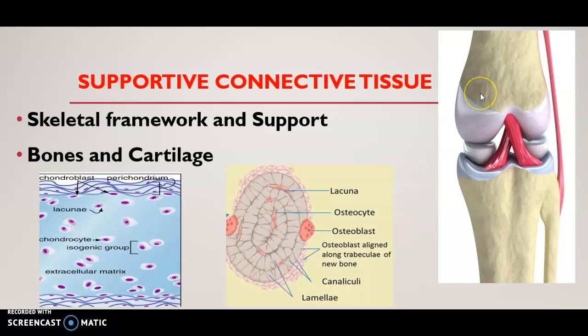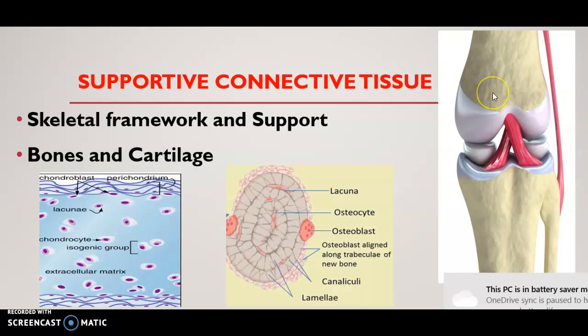The bone is very strong in nature but the cartilage is flexible in nature. Bone is made up of minerals and proteins, but cartilage is made up of only proteins. Bones have blood vessels but cartilage does not have blood vessels.